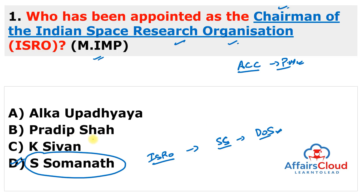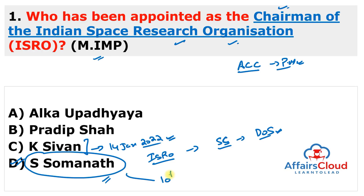S. Somnath will succeed K. Sivan, who is set to retire on 14th January 2022. K. Sivan was also the Space Secretary of the Department of Space. Now he has retired, and S. Somnath is the new chairman and Space Secretary. You can also remember that he becomes the 10th chairman of ISRO.